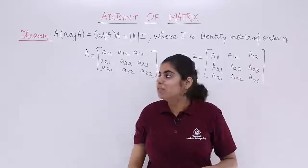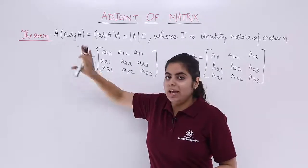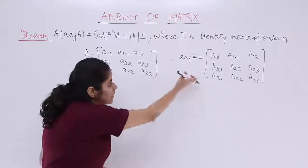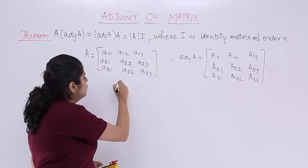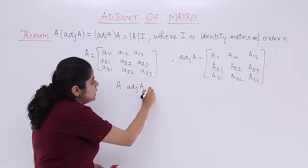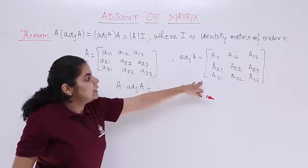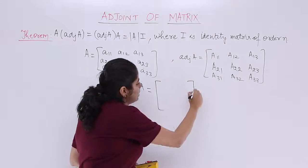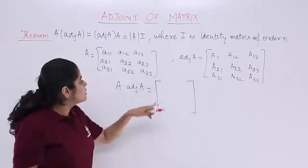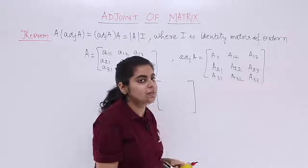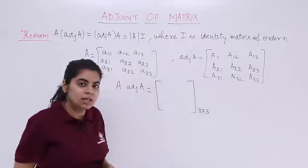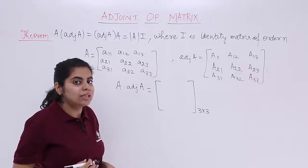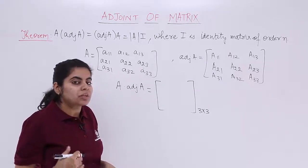According to the theorem, we have to calculate A into adjoint A — that is, multiply matrix A by adjoint A. Multiplying these two 3x3 matrices will again give a new 3x3 matrix. But before working through the multiplication, we need to use an important concept.